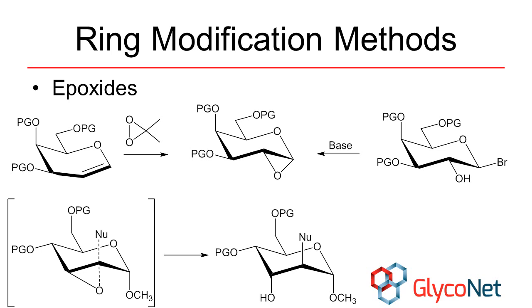In pyranosides, epoxide opening is dictated by the Furst-Plattner rule, which shows a preference for axial nucleophilic attack that maintains a near-chair conformation in the transition state. In furanosides, the various steric and electronic effects that we have previously discussed contribute to the overall selectivity.